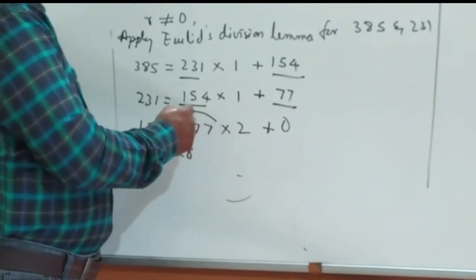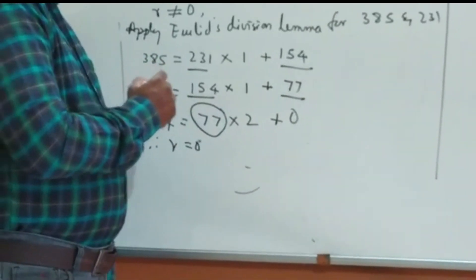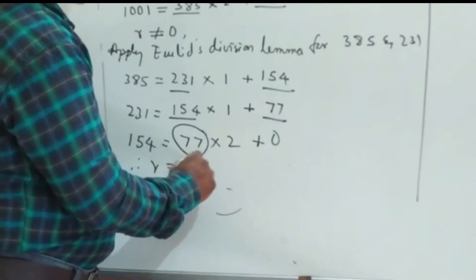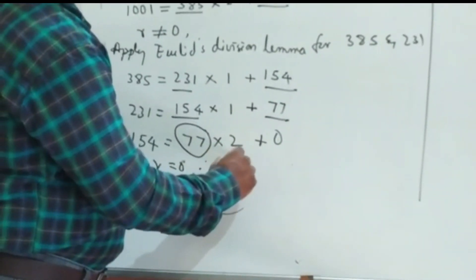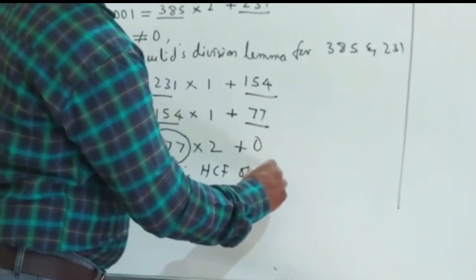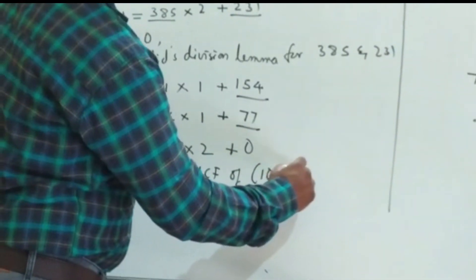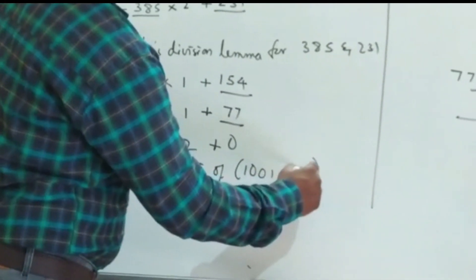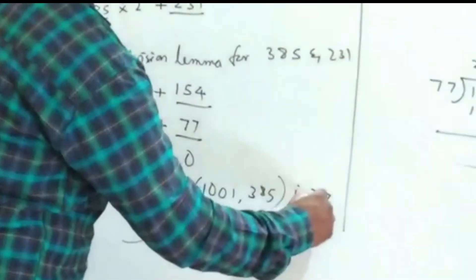We got remainder 0. Therefore, the divisor in this step, which is 77, is the HCF. Therefore, the HCF of 1001 and 385 is 77.